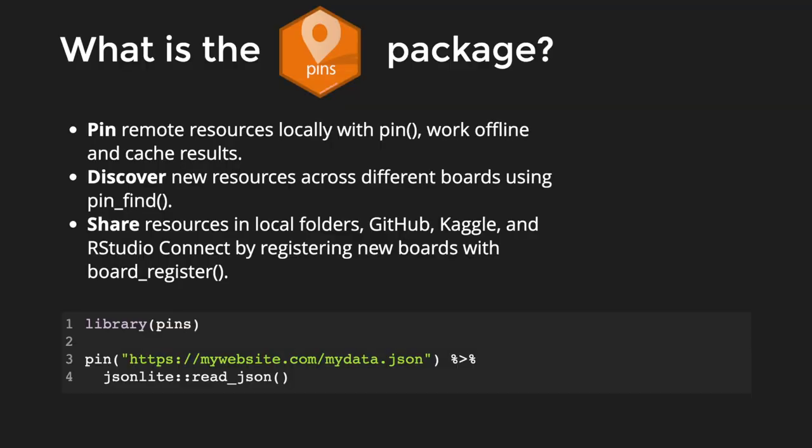How does this work? The pins package is quite simple. You install it from CRAN, load the library, and then ask it to pin a dataset — either an R object, a remote resource, or a local file — into your local board. After you pin that resource locally, you can use your favorite tools to process it. In this case, we're reading a remote JSON file, saving it locally, and then using jsonlite to read it. That's the simple use case of pins to bring things into your local machine.